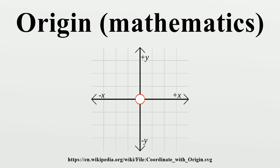In Euclidean geometry, the origin may be chosen freely as any convenient point of reference. The origin of the complex plane can be referred to as the point where the real axis and imaginary axis intersect each other. In other words, it is the complex number zero.